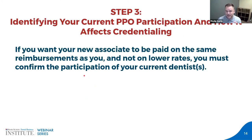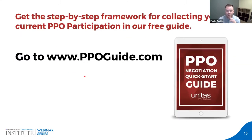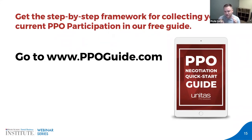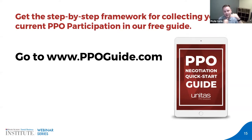If you want the step-by-step framework for collecting your current PPO participation before credentialing, it's all in a free guide available at www.ppoguide.com. The purpose of the guide is to teach you how to negotiate on your own, but the first part covers how to gather your participation. It's free — just go to ppoguide.com, enter your name and email, and it will email you the PDF link.